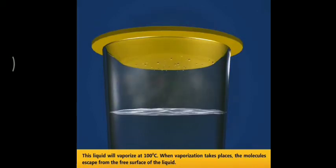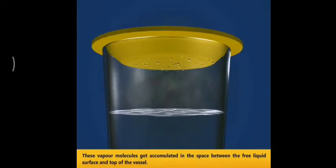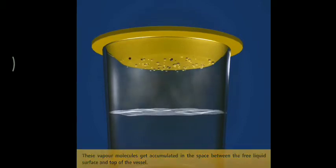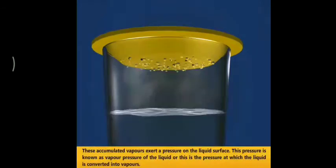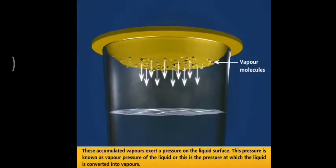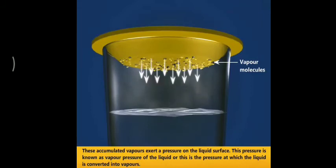These vapor molecules get accumulated in the space between the free liquid surface and top of the vessel. These accumulated vapors exert a pressure on the liquid surface.